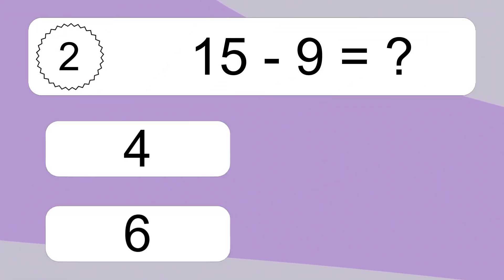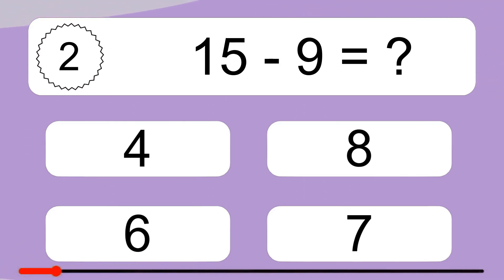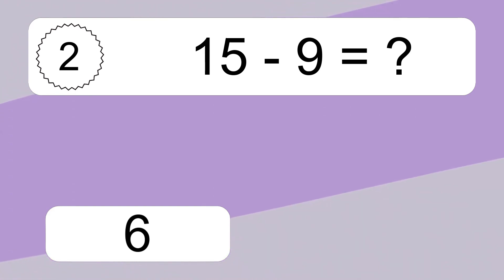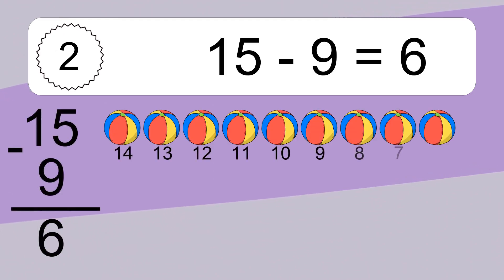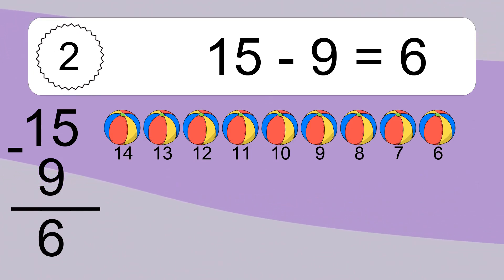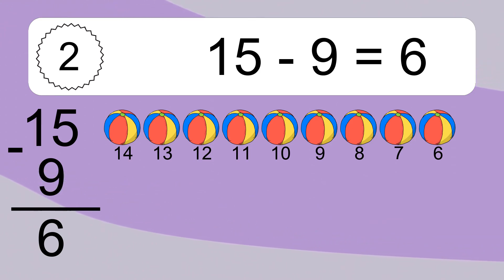15 minus 9 equals what? 15 minus 9 equals 6. Let's count it: 14, 13, 12, 11, 10, 9, 8, 7, 6.